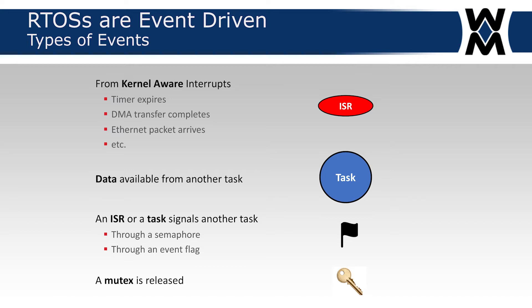A DMA transfer completes, an Ethernet packet arrives — each one of those events causes an interrupt service routine to fire, which then signals the RTOS that maybe a task is waiting for this event to have occurred, and the RTOS will decide which task is the most important task ready to run. It's also possible for data to be available or a signal to come from another task, and the RTOS will decide whether or not that's the most important task to run.